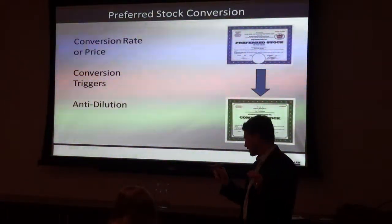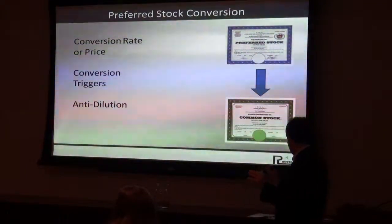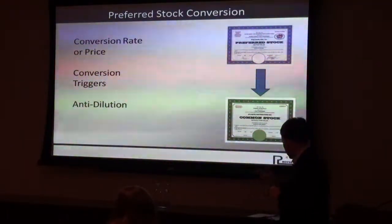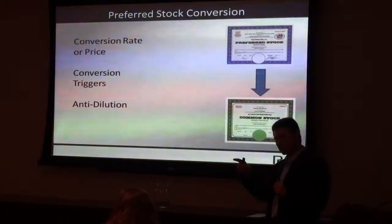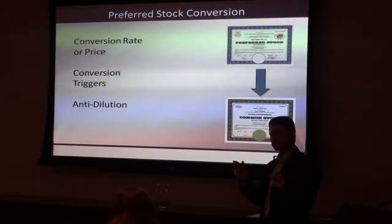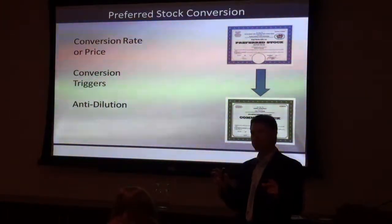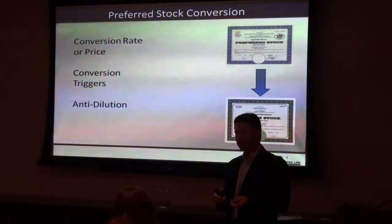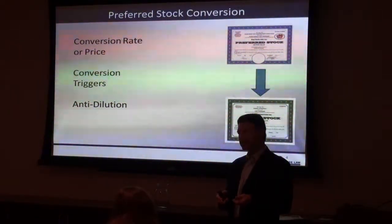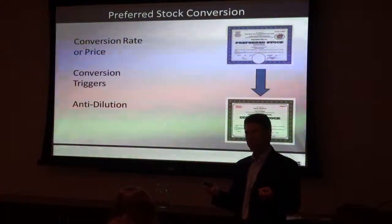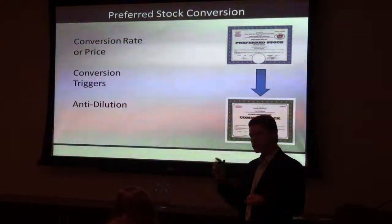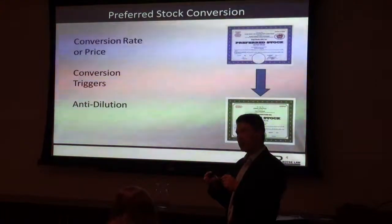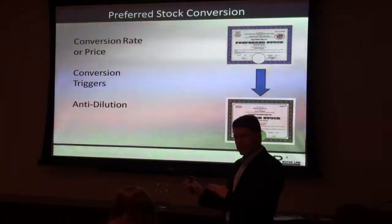The conversion price is typically going to be the issue price of the preferred divided by the conversion price. The conversion price starts out as issue price. So if I sell you preferred stock for a dollar a share and then the next day we do an IPO, it's going to convert at the conversion price — the conversion price is going to be one dollar a share. So it all works out one to one.